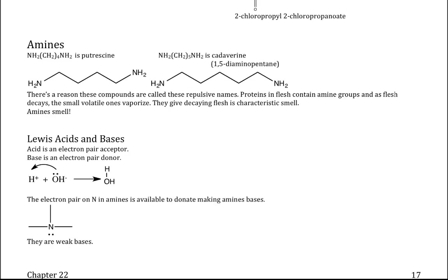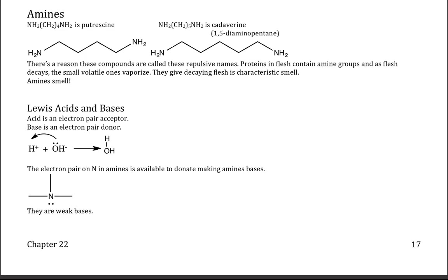Our last functional group is the amines. They contain nitrogen, which usually has three single bonds around it and a lone pair. Because of that lone pair, amines are bases — they are one of the main bases in the organic world, and they are weak bases. That is it for our Chapter 22 lecture. Go back over your handout notes looking at all the examples. Read over the parts of Chapter 22 we have covered. Do the homework problems assigned, and when the quiz for Chapter 22 is open, be sure to take it.